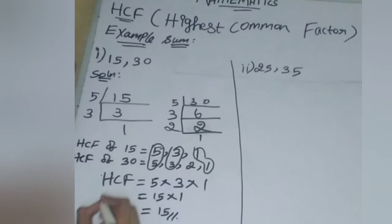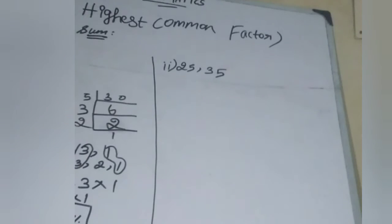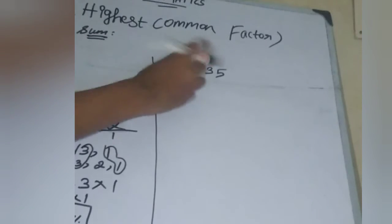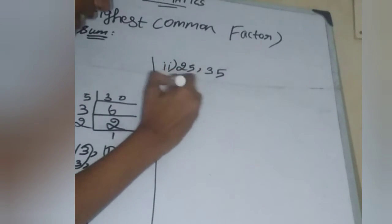The HCF is equal to 15. Let's look at the next example. The second example is 25 and 35.